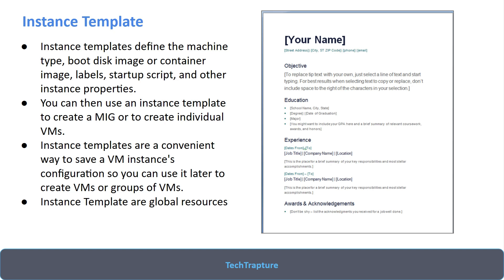That was the introduction to instance groups in Google Cloud — what is a managed instance group, what is an unmanaged instance group, and what is an instance template. Now I'll go to the Google Cloud Console and we'll create our first managed instance group, see how to create an instance template, deploy a simple web application with a managed instance group, and see how we can achieve high availability and scalability with it.